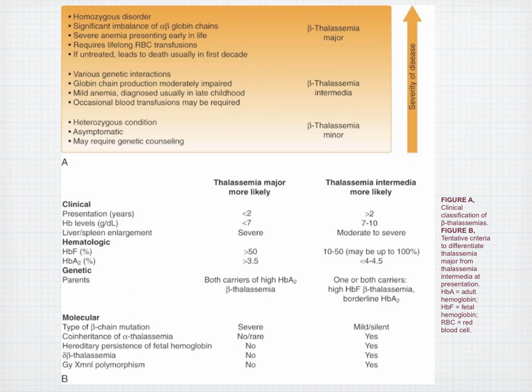Figure A shows the clinical classification of thalassemias, and Figure B presents tentative criteria to differentiate thalassemia major from thalassemia intermedia. For thalassemia major: presentation before age 2, hemoglobin less than 7, severe liver/spleen enlargement, and hemoglobin F greater than 50%. For thalassemia intermedia: presentation after age 2, hemoglobin 7 to 10, moderate to severe enlargement, and hemoglobin F at 10 to 50%. This helps differentiate between the two major thalassemias that are going to cause problems.